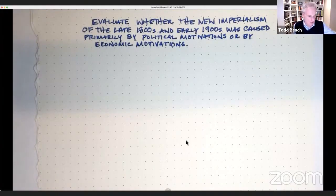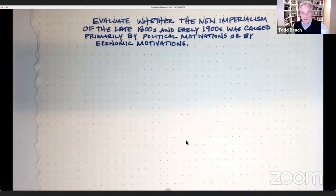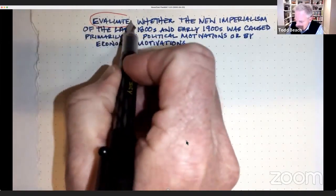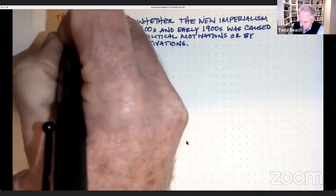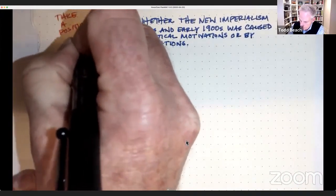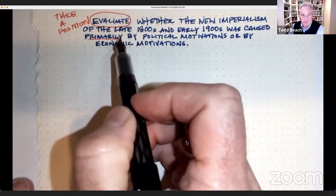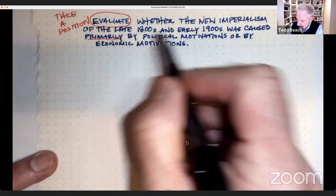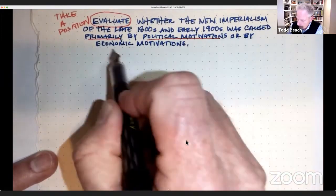Alright, so this is going to be your prompt to evaluate whether new imperialism of the late 1800s and early 1900s was caused primarily by political motivations or economic motivations. So when you're getting a task word like evaluate, that means they want you to look at the evidence and take a position.